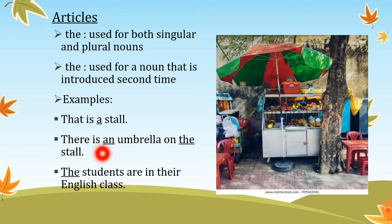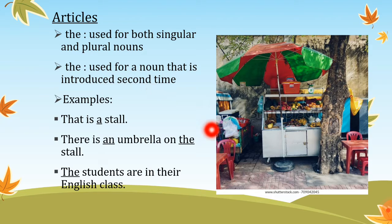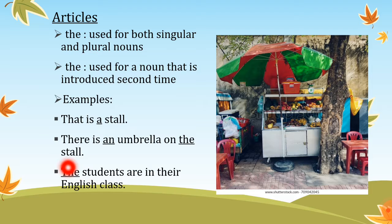The sentence is: 'There is an umbrella on the stall.' The first sentence introduced the noun 'stall', so we used 'a' with it. But in this sentence, 'stall' is mentioned a second time, therefore we use 'the stall'. The third example is: 'The students are in the English class.' Here 'the' is used with the plural noun 'students'.